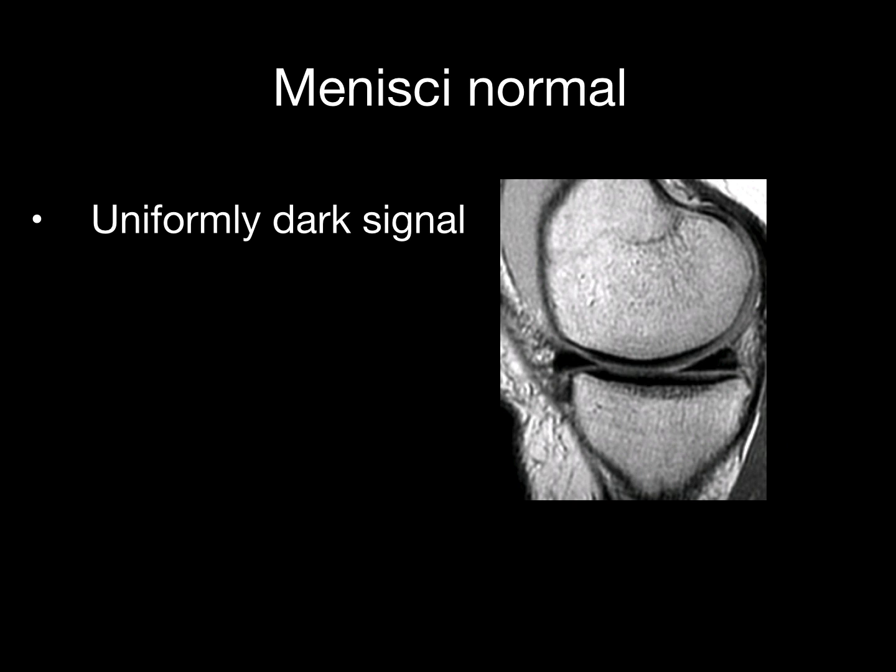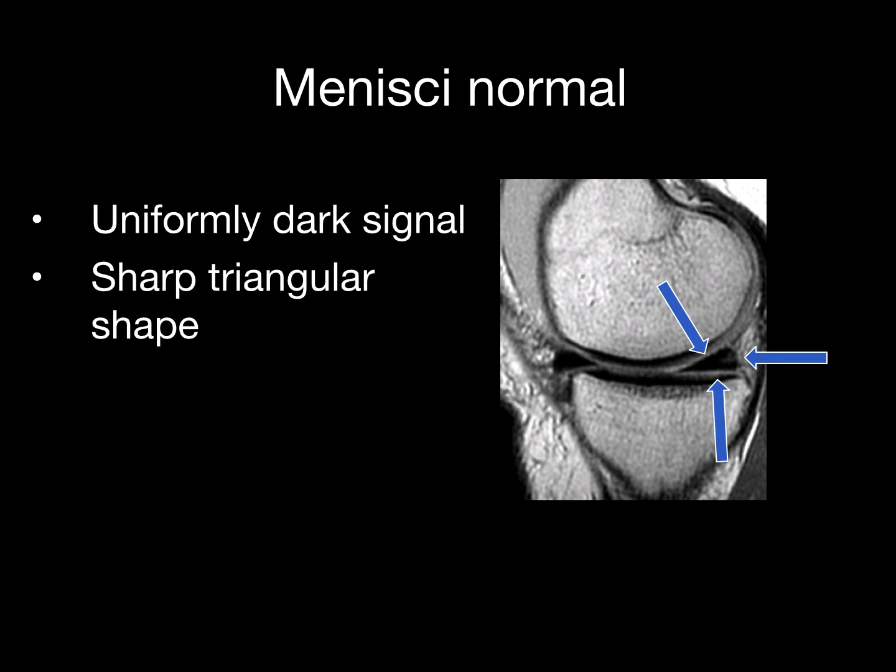A normal meniscus is uniformly dark in signal and has a sharp triangular shape.